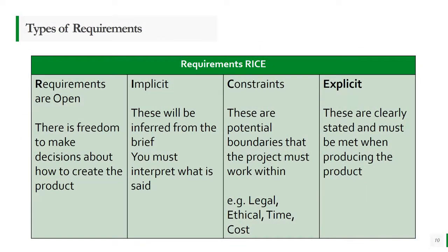The different types of requirements in a client brief can be categorised using the acronym RICE. First, requirements can be open — this is where you've got some freedom to make your own decisions about how to create the product, with some flexibility on design. Then you have implicit requirements, which are inferred from the brief — you have to interpret what it's saying, so they act as general guidelines.